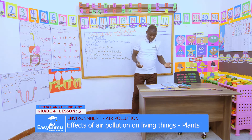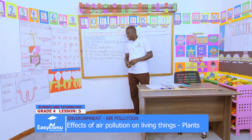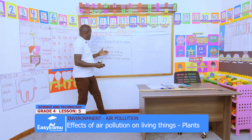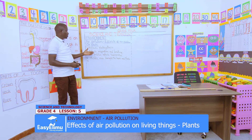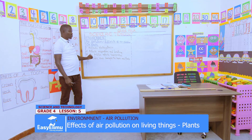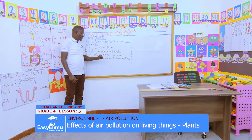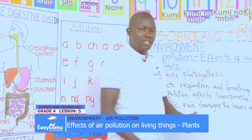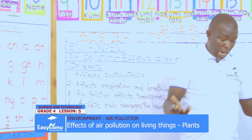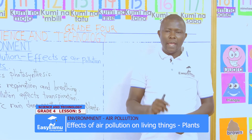Any other effects you have discussed? Victor? These are the effects of air pollution on plants: it affects photosynthesis, it affects the respiration and breathing of the plant, air pollution also affects transpiration, and the acidic rainfall damages the leaves and the plants. The plant may wither and dry up because of the acid rainfall — and all this is because of air pollution.